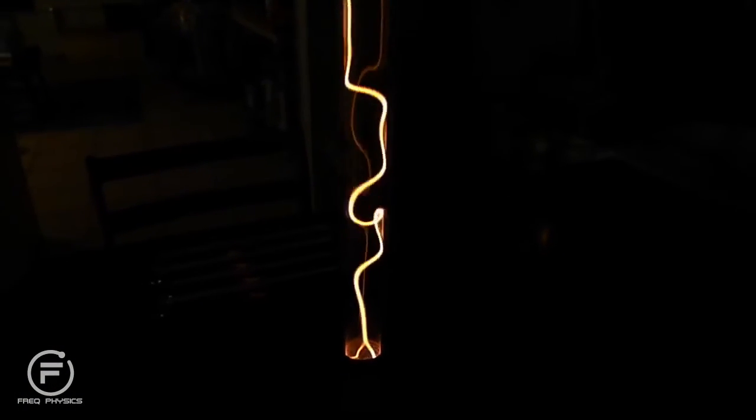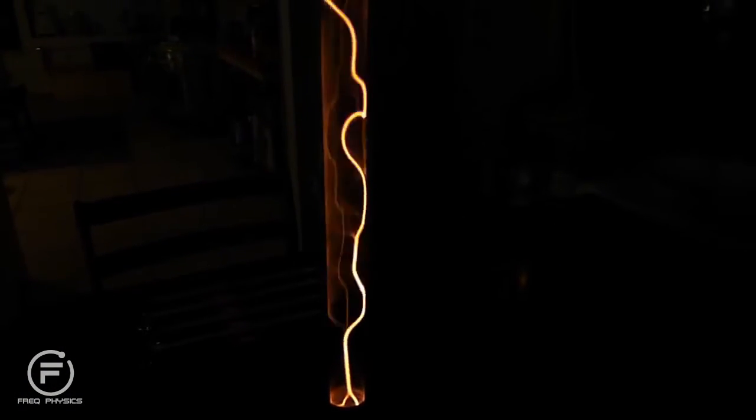You can see that the main body of this discharge is sort of a golden color but the ends of it are very red and that red color of course is characteristic of neon. So let's look at some other tubes here.